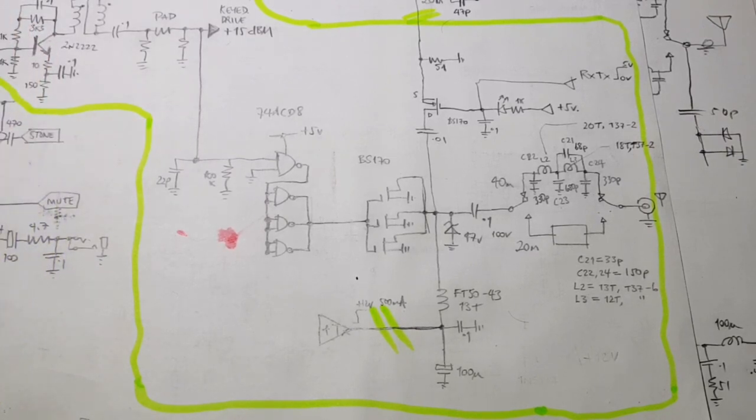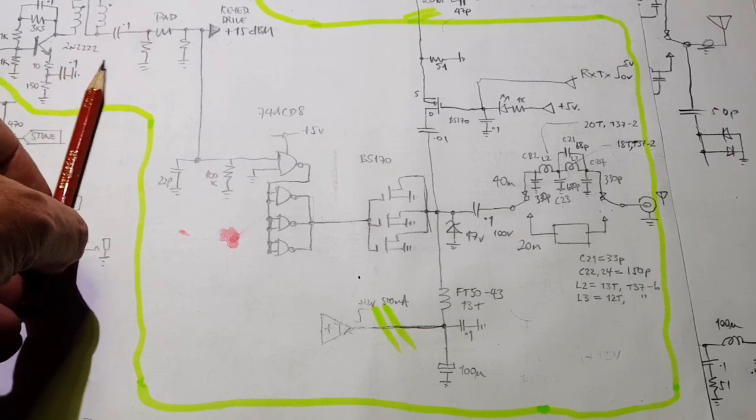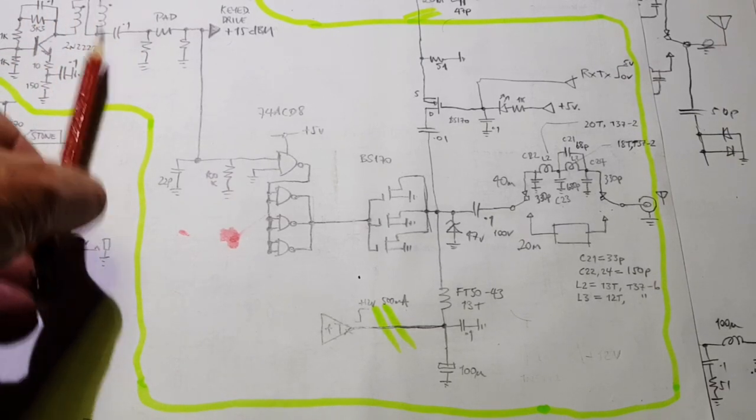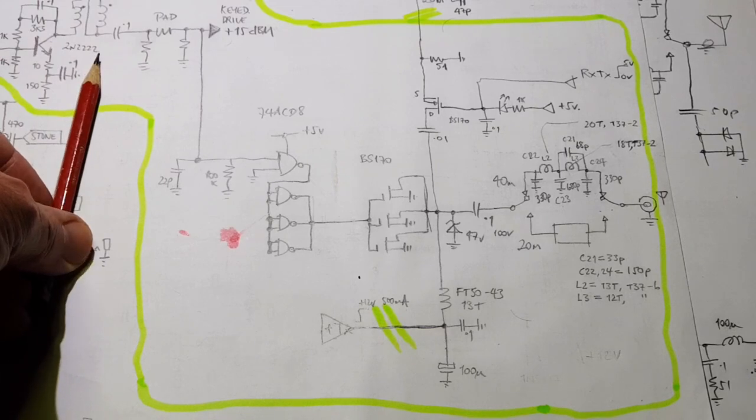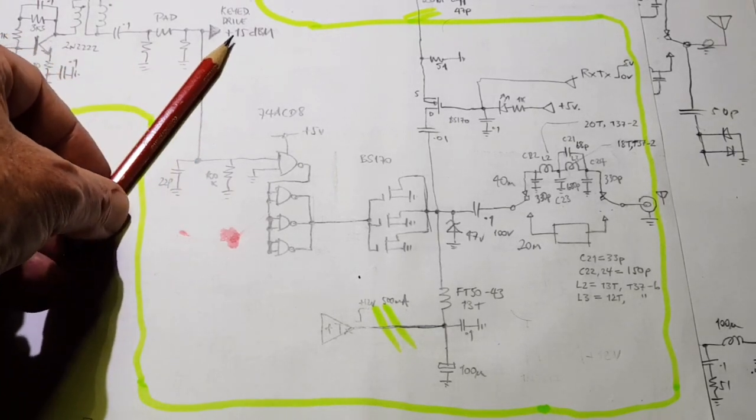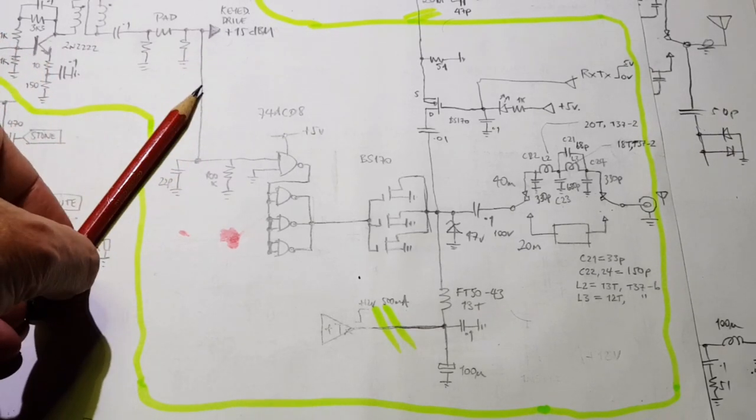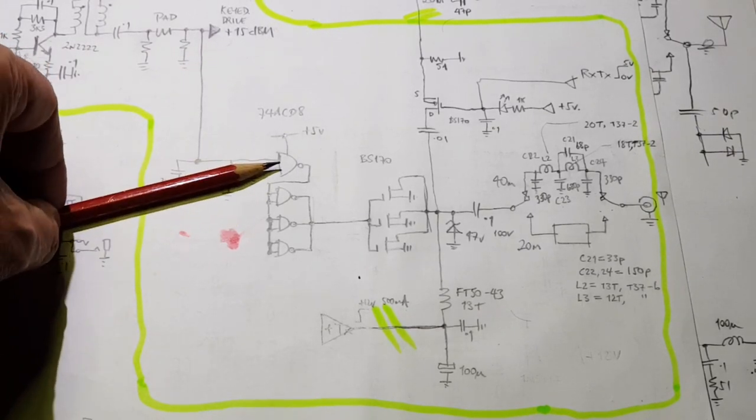According to EI9GQ, I'm going to get about 200 milliwatts out of this key driver. So I'm going to have to add an additional gain stage, maybe a 2N2222, a broadbanded gain stage there, to get this up to, say, plus 12 to plus 15 dBm. We're going to need enough signal here to open these gates.